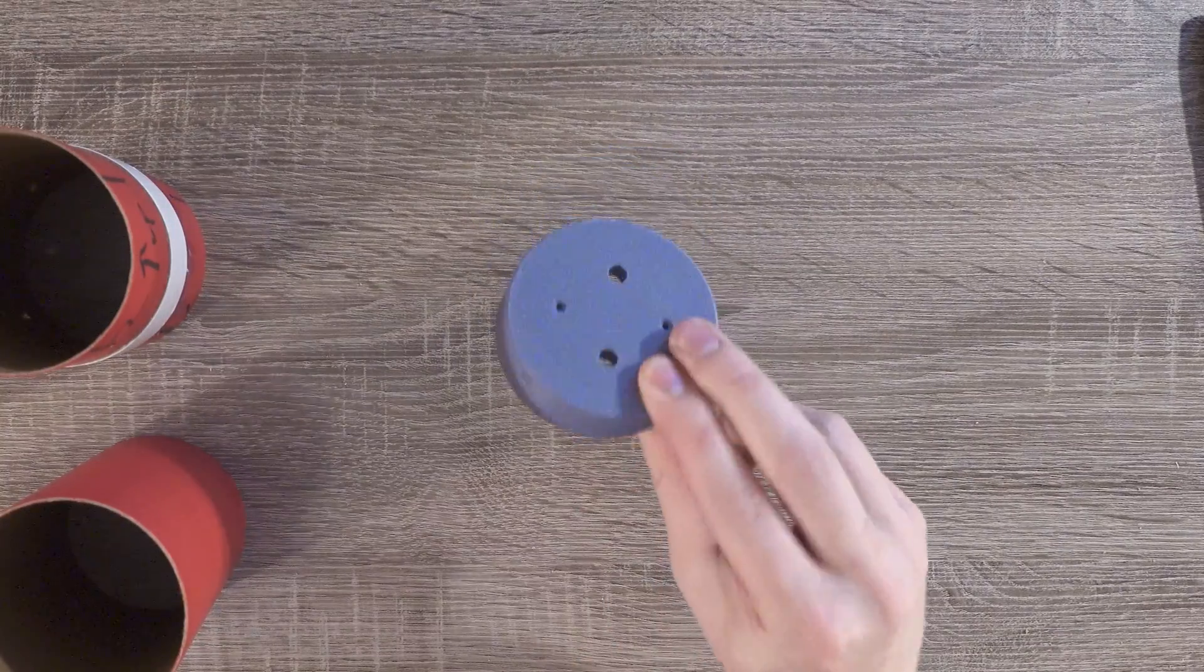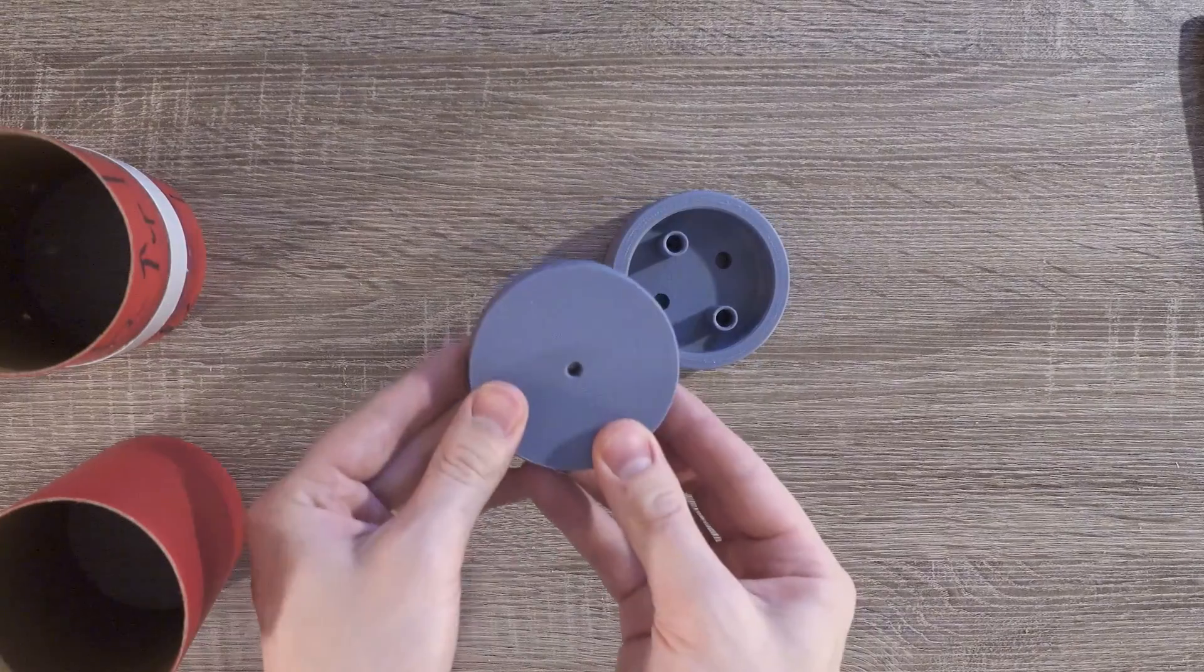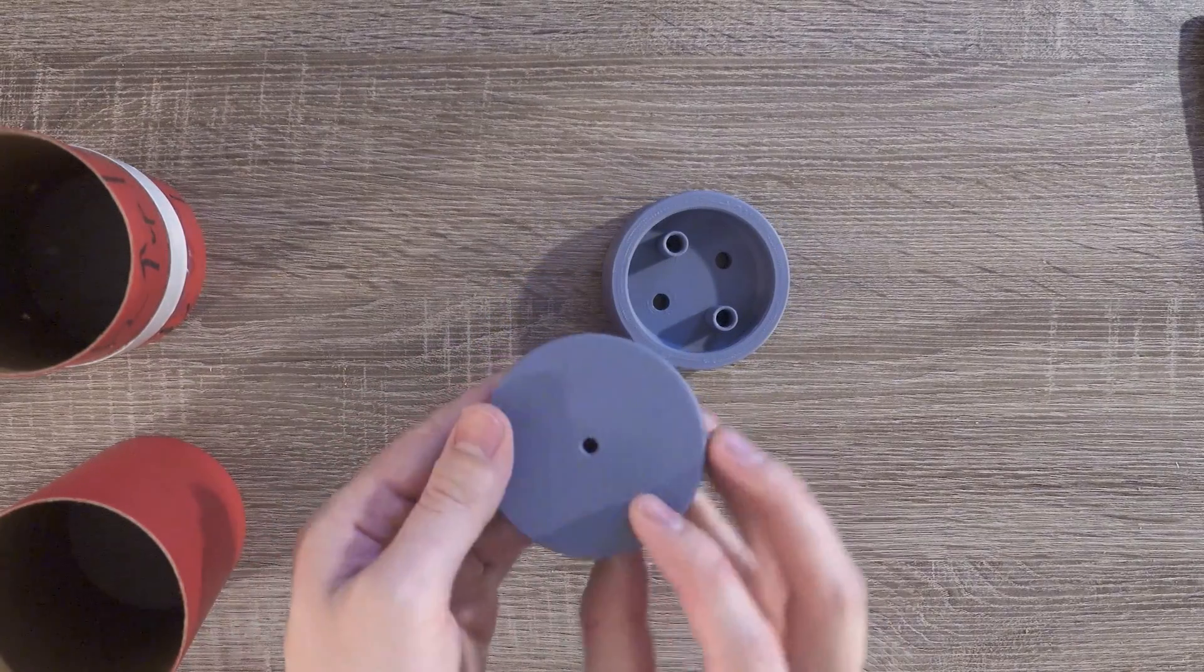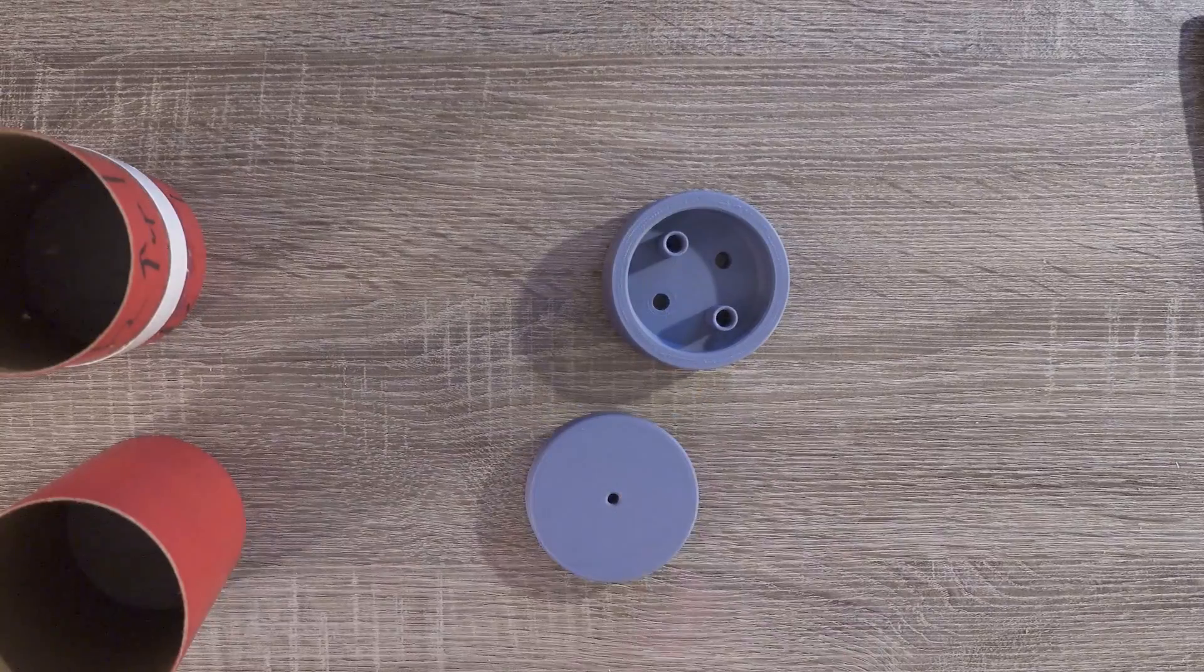The two 3D printed parts are the coupler bulkhead and the piston bulkhead. These are pretty simple designs, so if you don't have a 3D printer, you can probably build some yourself.